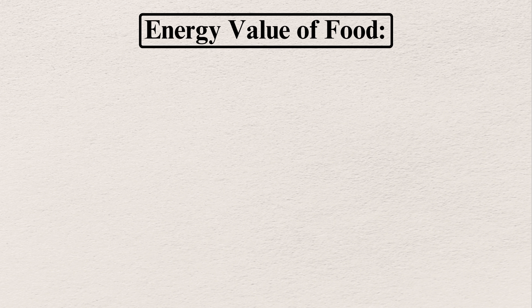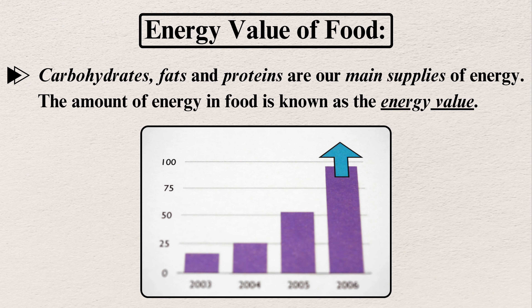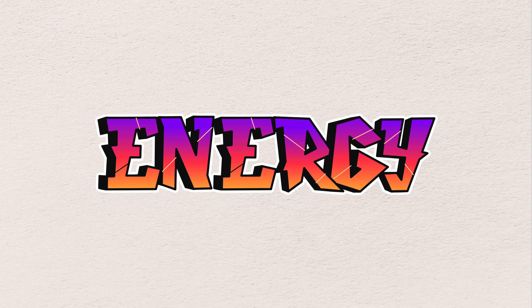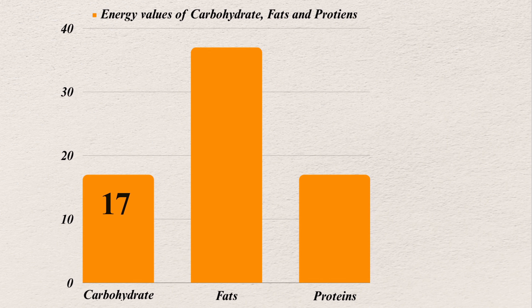Carbohydrates, fats, and proteins are the main suppliers of energy. The amount of energy in food is known as the energy level or energy value. Energy values: carbohydrates provide 17 kilojoules per gram, fats provide 37 kilojoules per gram, and proteins provide 17 kilojoules per gram.